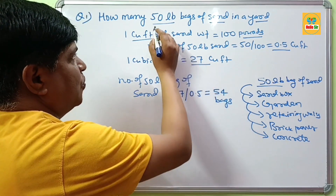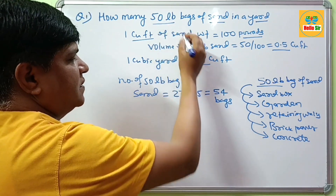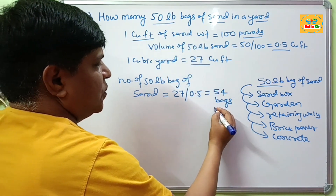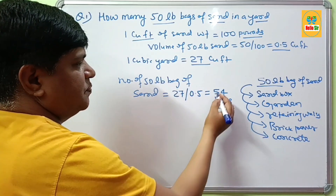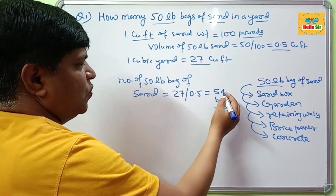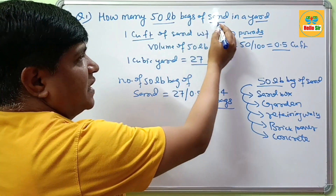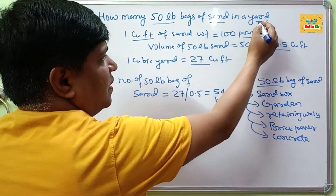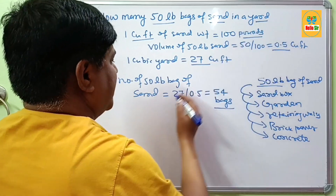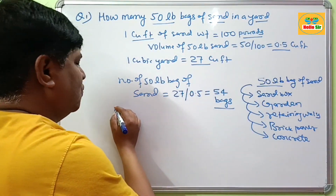So the answer is: 54 bags of 50 lb sand equals 1 cubic yard. Now your second question: how much area does 1 bag of 50 lb sand cover?